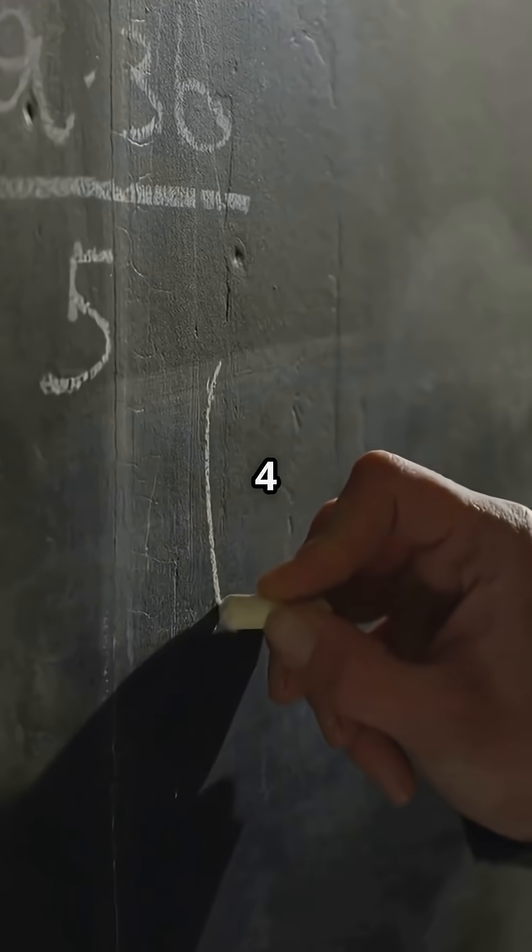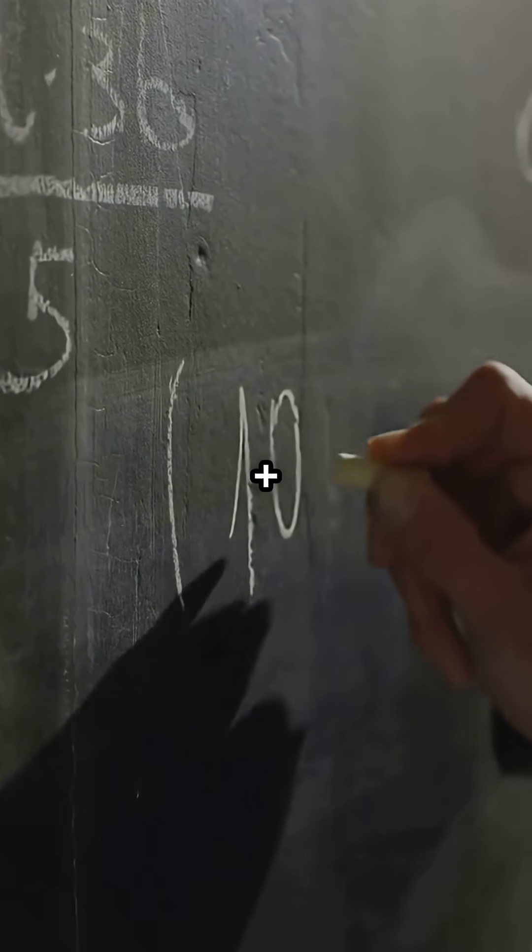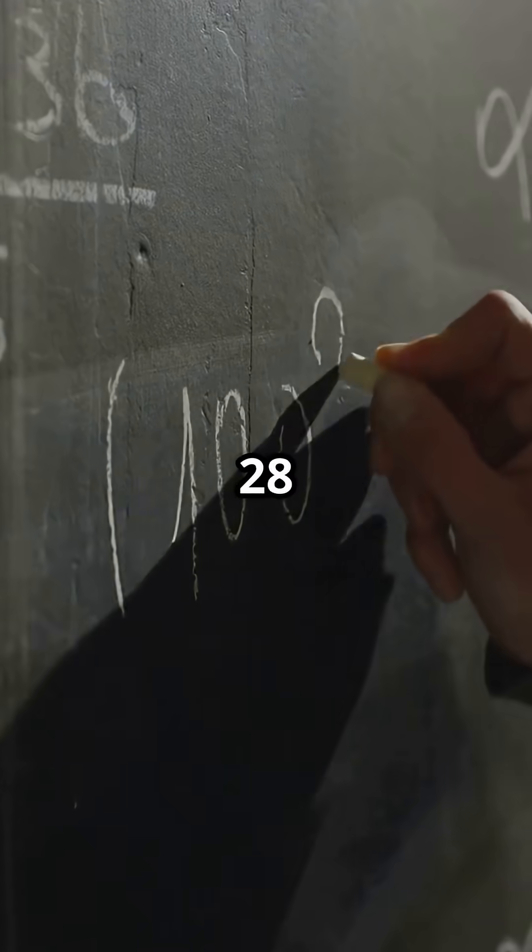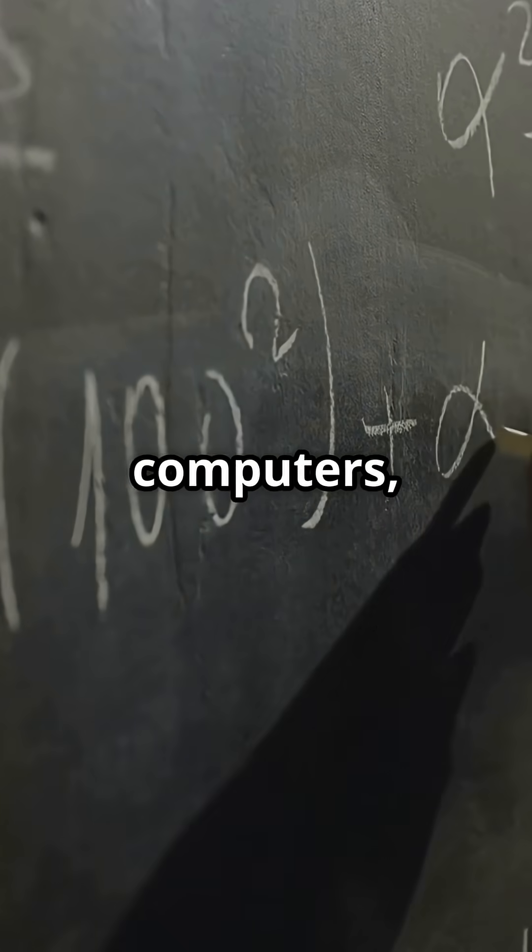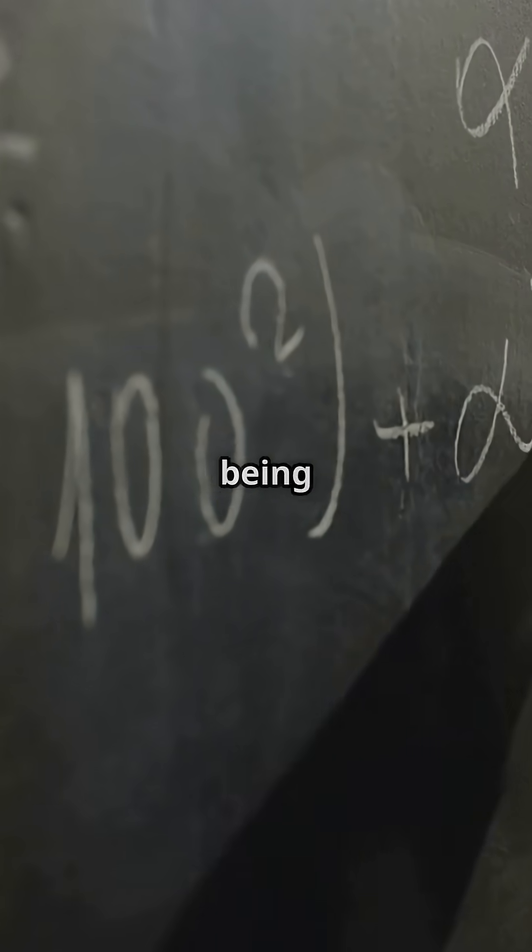For example, 4 equals 2 plus 2, 6 equals 3 plus 3, 10 equals 7 plus 3, 28 equals 23 plus 5, and so on, for millions and millions of numbers tested by modern computers, without a single exception ever being found.